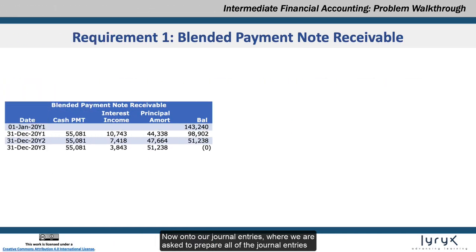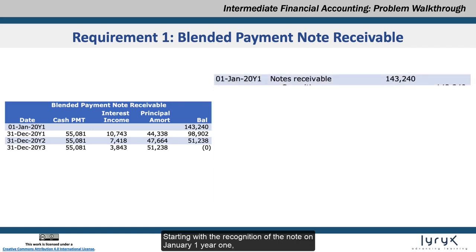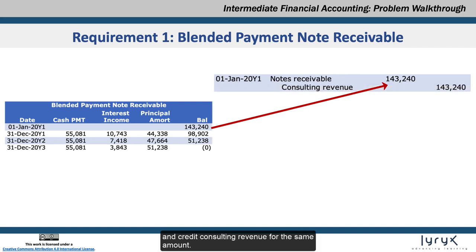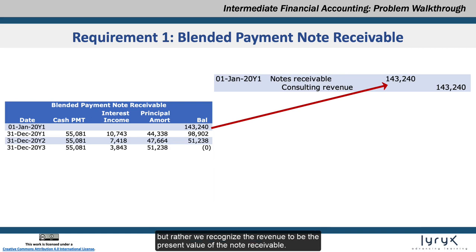Now on to our journal entries, where we are asked to prepare all of the journal entries for Year 1 and the December 31st journal entries in Year 3. Starting with the recognition of the note on January 1st Year 1, we will debit the note receivable for the present value calculated as $143,240 and credit consulting revenue for the same amount. Note that we are not recognizing revenue of $150,000, which is the value of the services performed, but rather we recognize the revenue to be the present value of the note receivable.